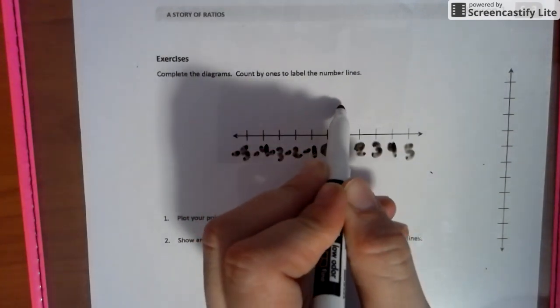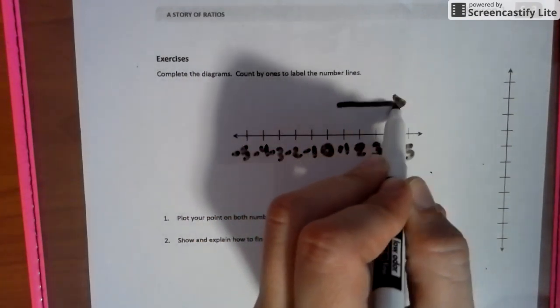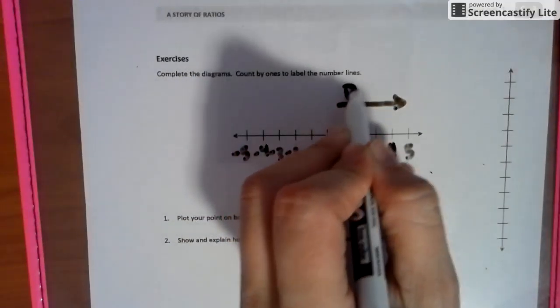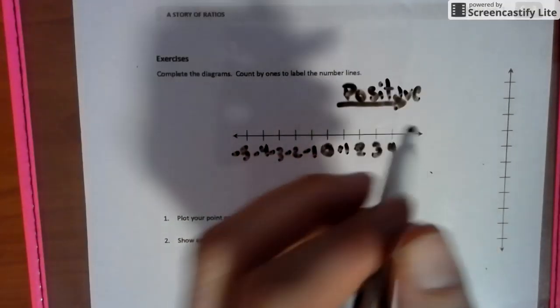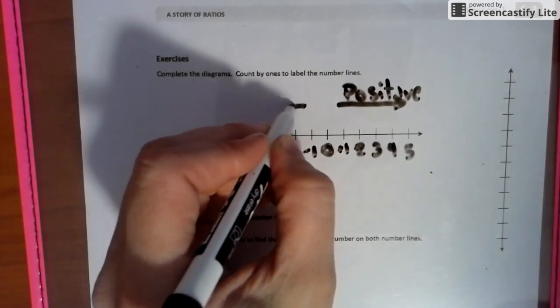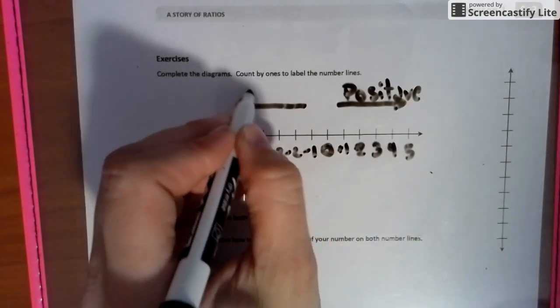So all numbers to the right of zero are positive. And all numbers to the left of zero are negative.